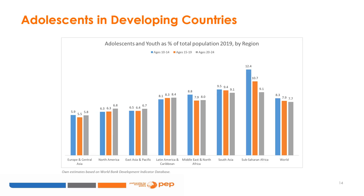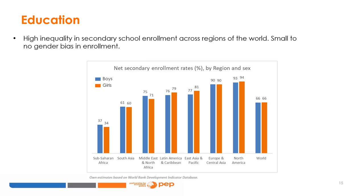The first target of Sustainable Development Goal 4 (SDG 4) is to ensure that all girls and boys complete free, equitable, and quality primary and secondary education leading to relevant and effective learning outcomes. Most countries have made significant progress regarding universal primary education, reaching 92 percent coverage in the world in 2015. Since then, most countries have begun to shift attention toward mobilizing resources to meet SDG 4 regarding secondary schooling.